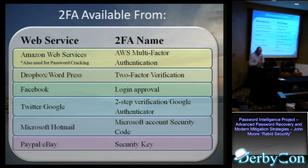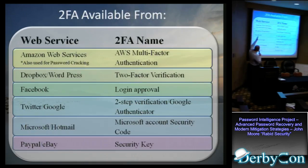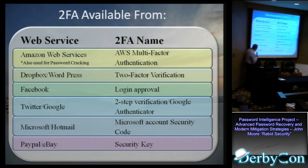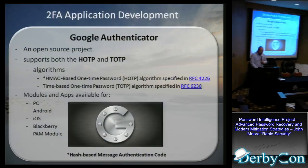Moving to two-factor authentication already implemented: Dropbox has a two-factor, Facebook has one, Twitter and Google as well. Twitter just got hacked and decided it's a good idea to do two-factor now. A lot of our problems go away when we start doing multi-factor. Hotmail and Microsoft moved to a security code, and PayPal has a security key as well. It works. Google puts out an open-source project called Google Authenticator. It uses two algorithms under common RFCs, with versions for PC, Android, iOS, Blackberry, and PAM for Unix and Linux. There's really no excuse for your company or web portal not to create some type of two-factor.